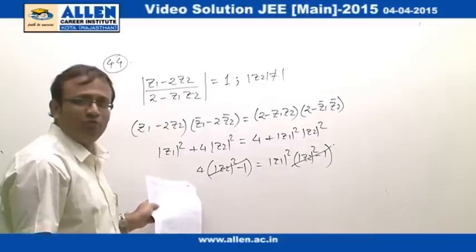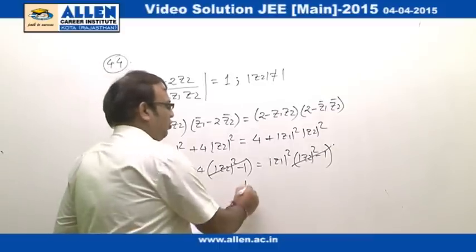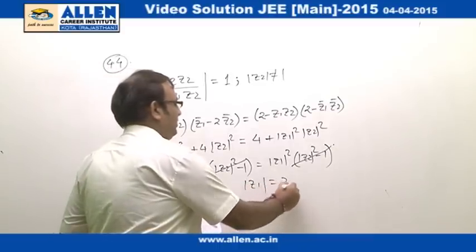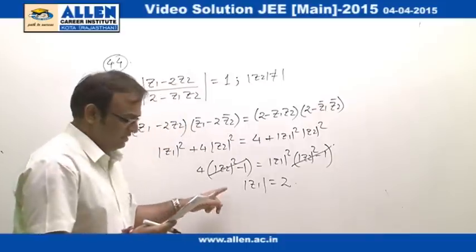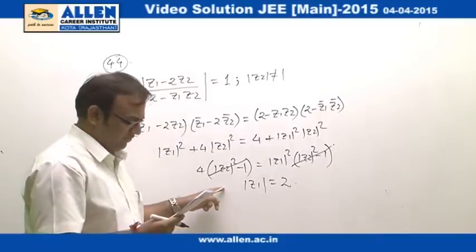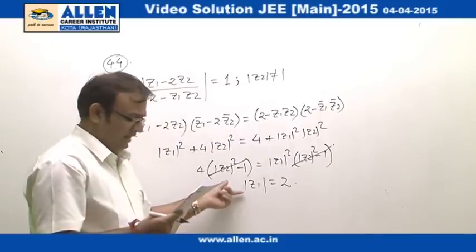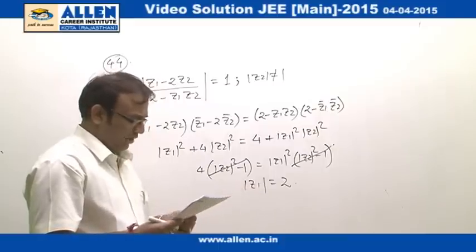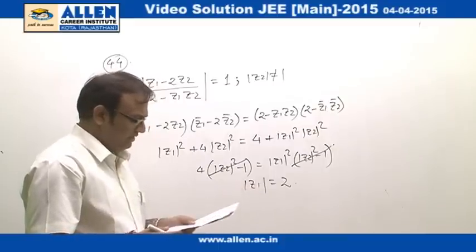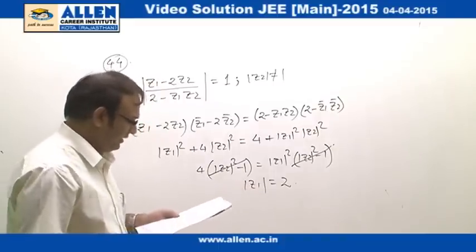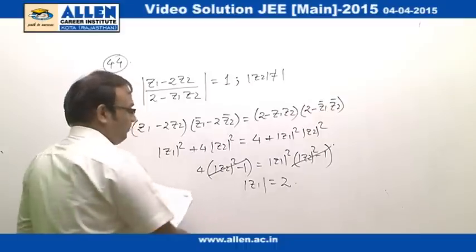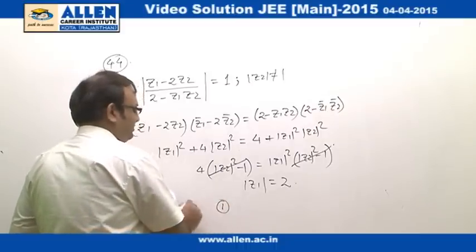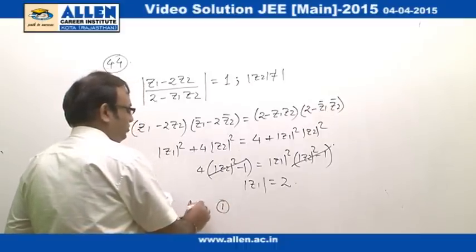This gives |z₁|²=4, so |z₁|=2. Therefore z₁ lies on a circle of radius 2, and accordingly option number 1 is the correct answer.